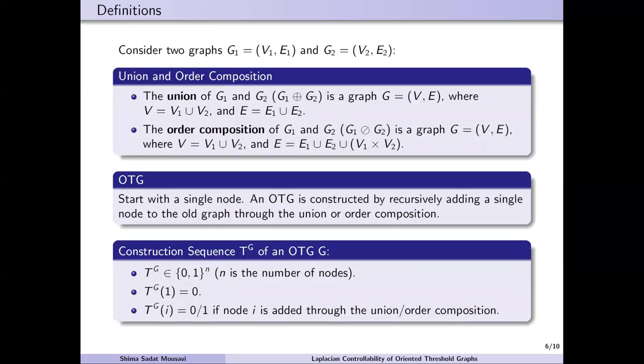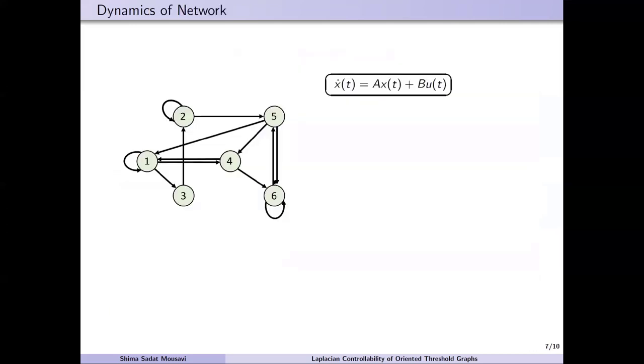Let's consider two graphs G1 and G2. Their union includes the union of their nodes and edges. Their ordered composition includes also all the edges from every node of G1 to any node of G2. Now let's start with a single node and recursively add a single node to the former graph through the union or ordered composition. Then, an OTG is constructed. In this work, we consider an LTI network defined over an OTG. X is the aggregated vector of states of nodes. A is the minus of the in-degree Laplacian of an OTG.